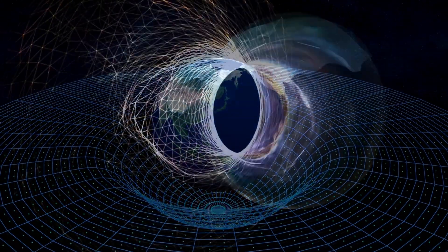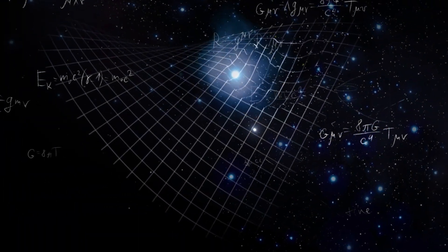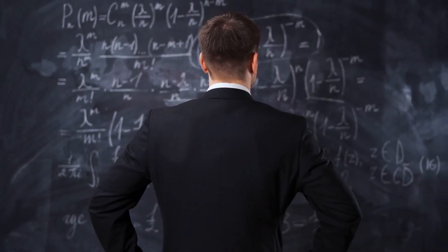Scientists have developed theories like loop quantum gravity and string theory to unify general relativity and quantum mechanics. However, both theories face significant conceptual and mathematical challenges.